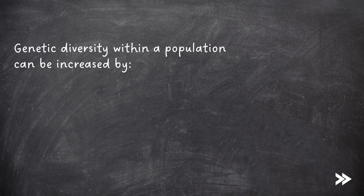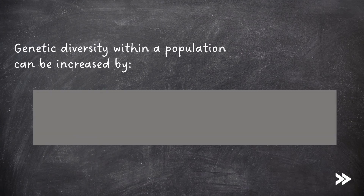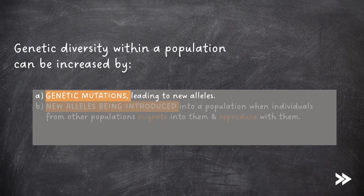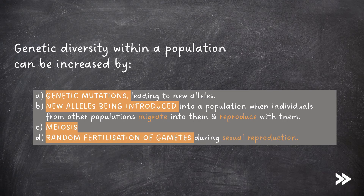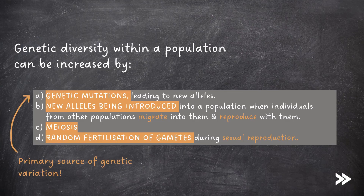Genetic diversity within a population can be increased by the following factors. First of all, genetic mutations, which lead to new alleles. Diversity can also be increased by new alleles being introduced into a population when individuals from other populations migrate into them and reproduce with them. Meiosis can also increase genetic diversity within a population, as well as random fertilization of gametes during sexual reproduction. Of these four factors, genetic mutations are the primary source of genetic variation.